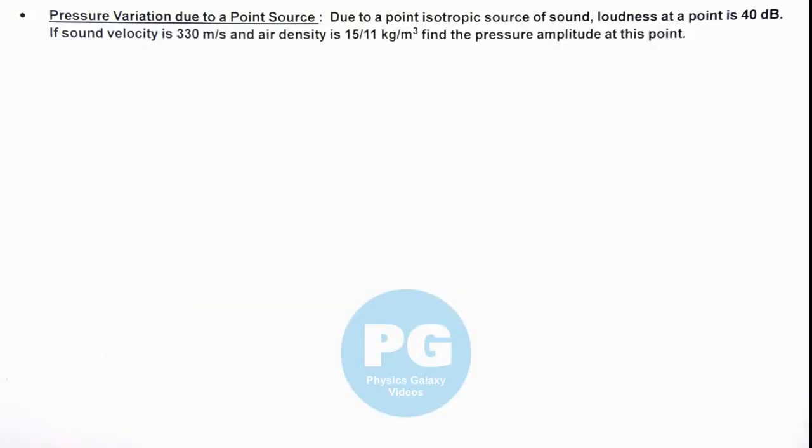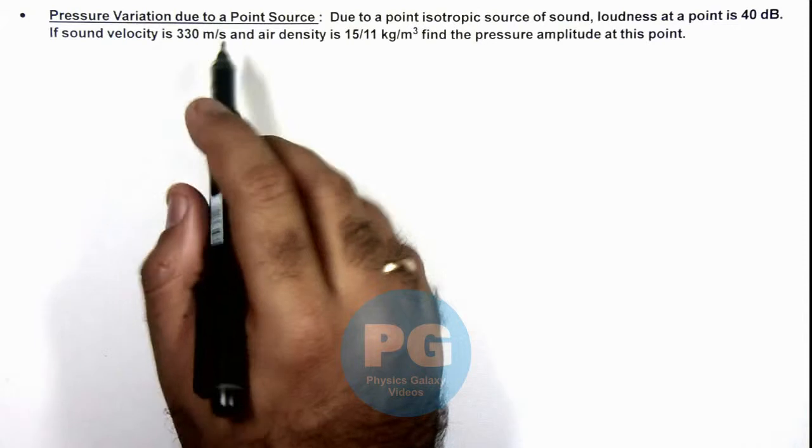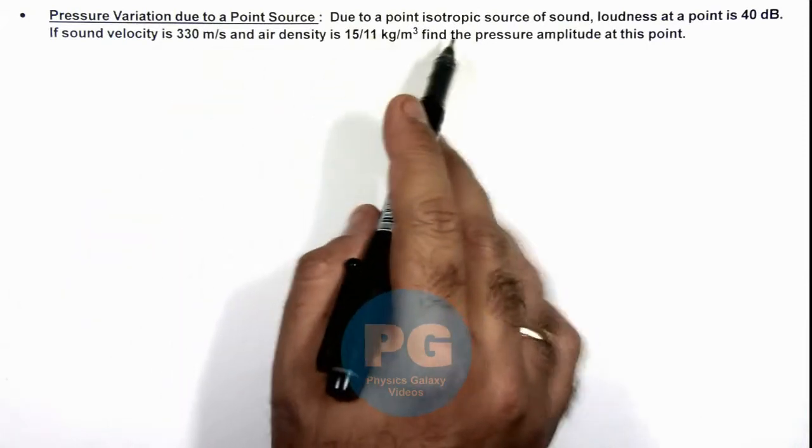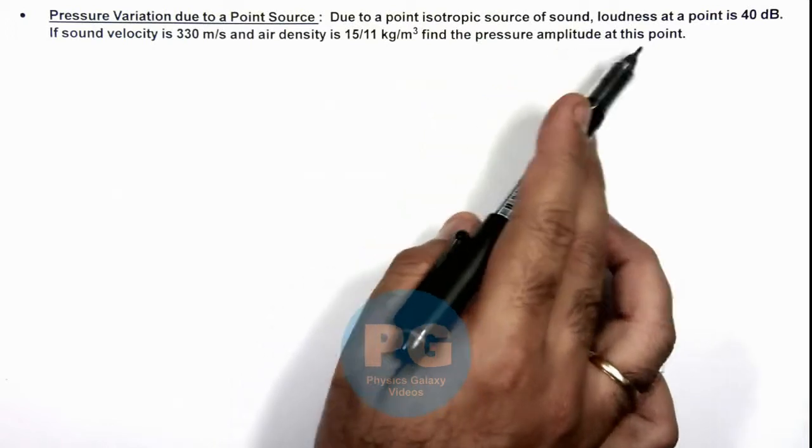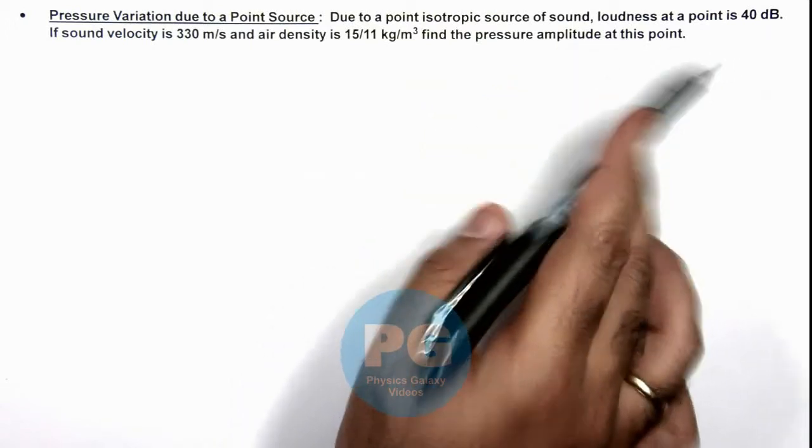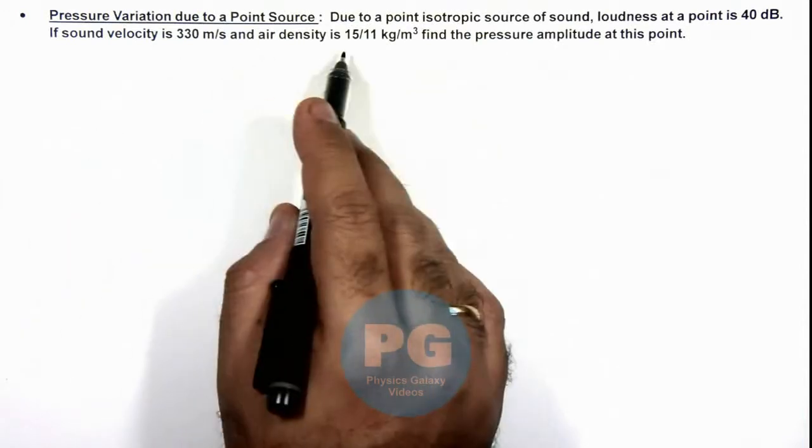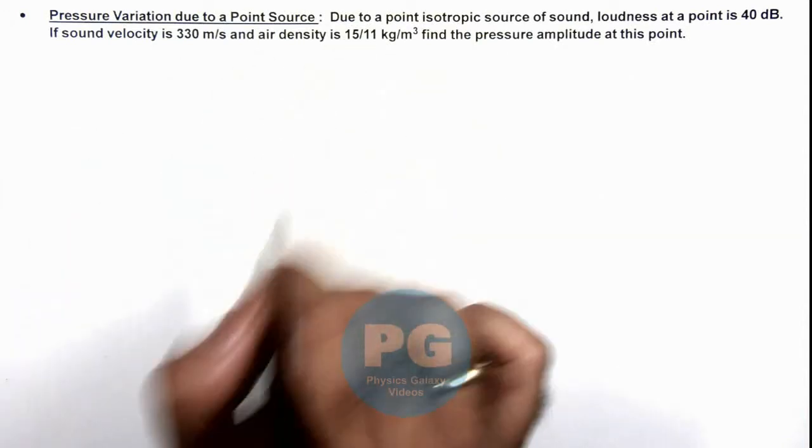In this illustration we'll be analyzing pressure variation due to a point source. We are given that due to a point isotropic source of sound, loudness at a point is 40 dB. Sound velocity is 330 meters per second and air density is 15/11 kg per meter cubed.